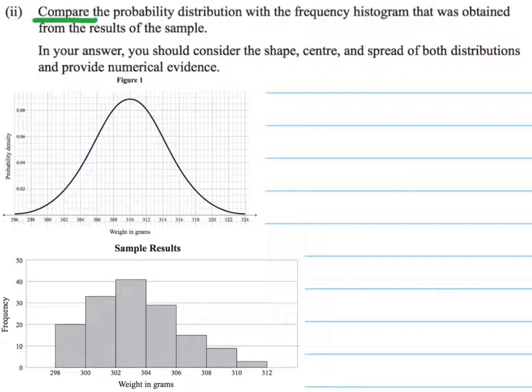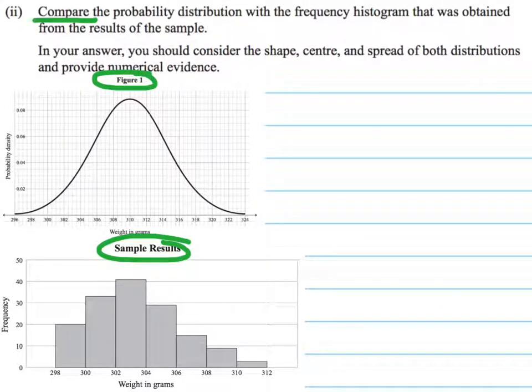And they want us to compare the probability distribution, so that's our figure 1, with the frequency histogram which is our sample results. So they're wanting us to compare the theory with the sample.